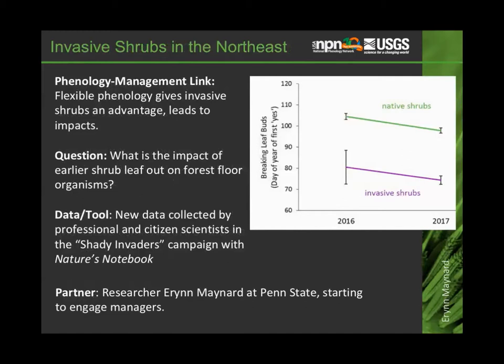Back in the Northeast, we're working on a project where the link between phenology and management focuses on the fact that many invasive shrubs have a more flexible phenology — they're able to leaf out earlier during an early spring and out-compete native species. Researcher Erin Maynard at Penn State is looking at the impact of earlier invasive shrub leaf out on forest floor organisms. We have a joint campaign where Nature's Notebook observers monitor invasive and native shrub phenology, and she uses that data as part of her research on the impact of these invaders.